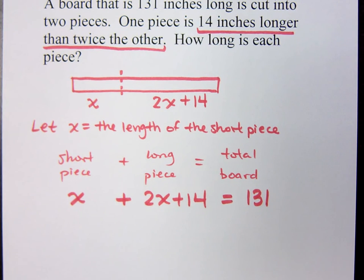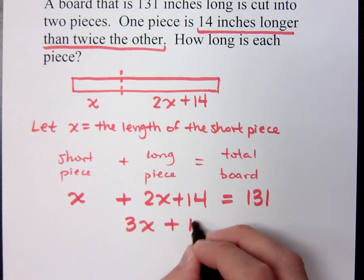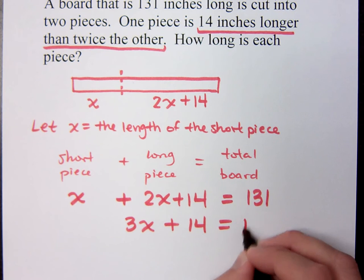So this is an equation that I know how to solve. But before I really get into solving, what should I do first? Combine like terms. Combine like terms. And when I do that, I get what? 3x plus 14 equals 131. 3x plus 14 equals 131.